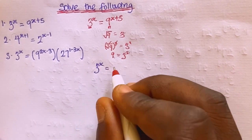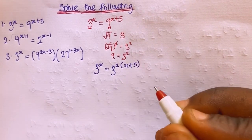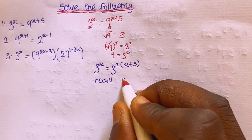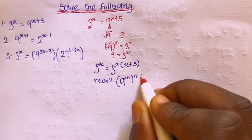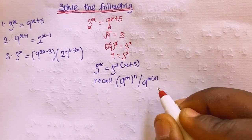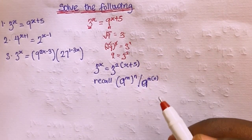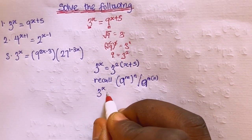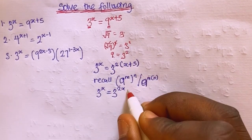So I'm going to have 3 raised to the power x equals 3 raised to the power 2 times bracket x plus 5. Recalling the law of indices: a raised to m into brackets n means we multiply m by n. So I'll expand the bracket: 3 raised to x equals 3 raised to the power 2x plus 10.